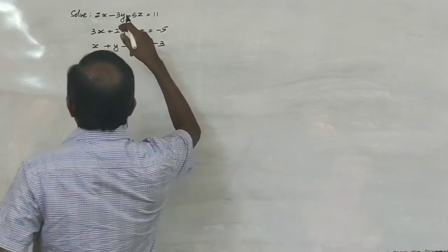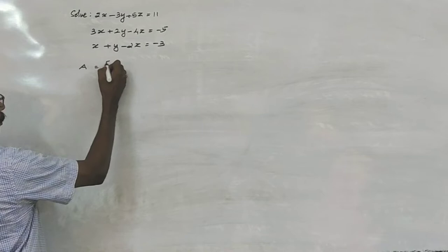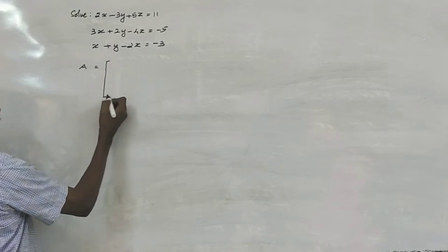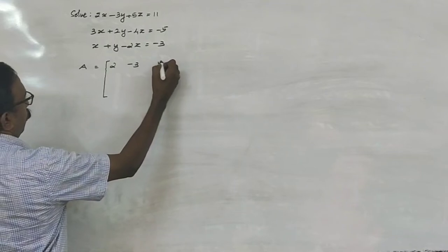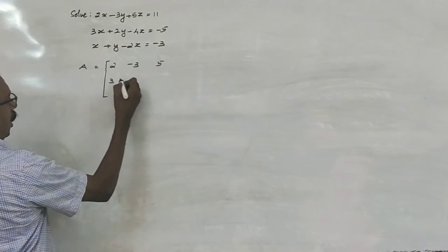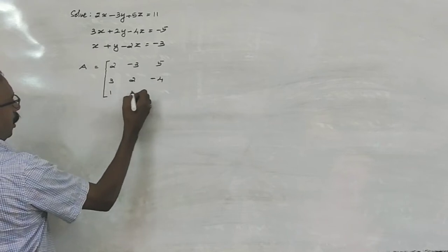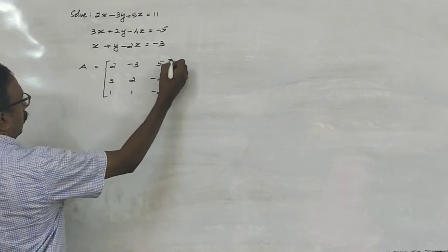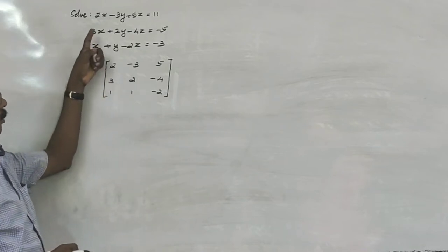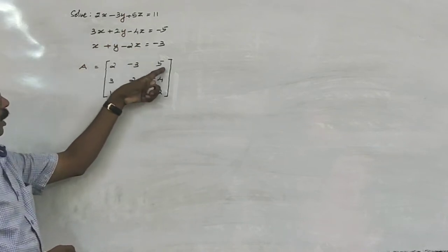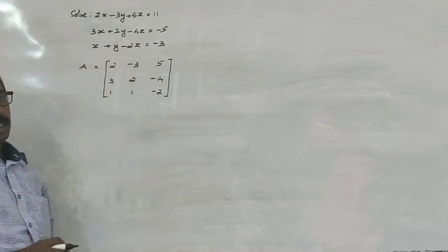Here, this equation can be rewritten. A is equal to the coefficient matrix of the system of equations. That is 2, minus 3, 5; 3, 2, minus 4; 1, 1, minus 2.